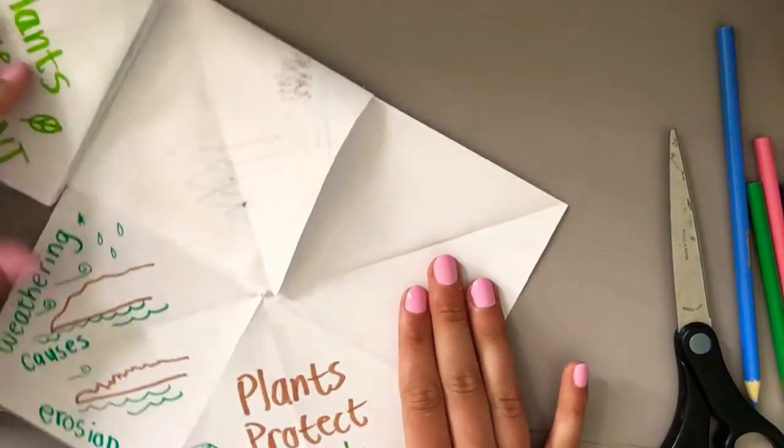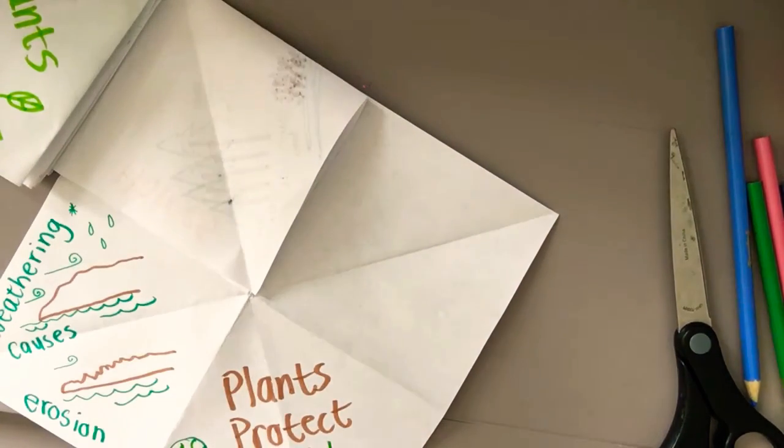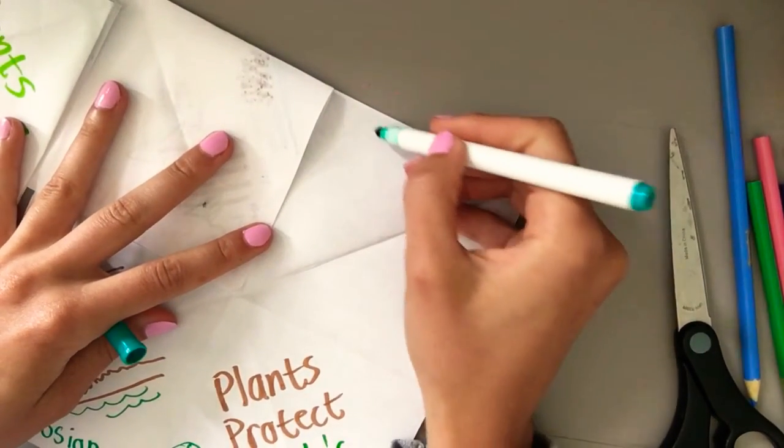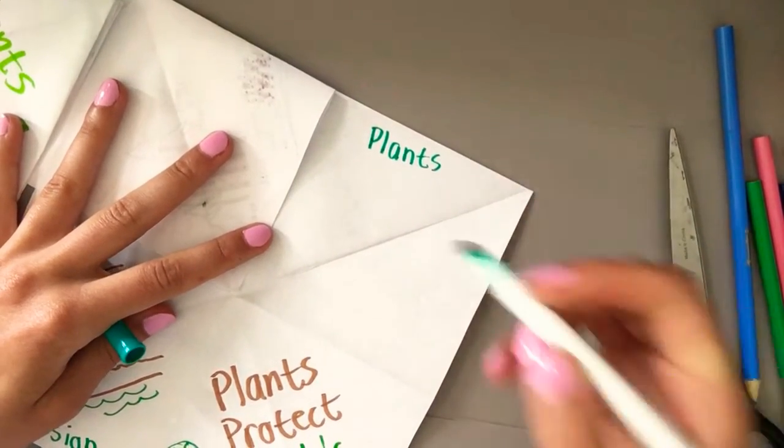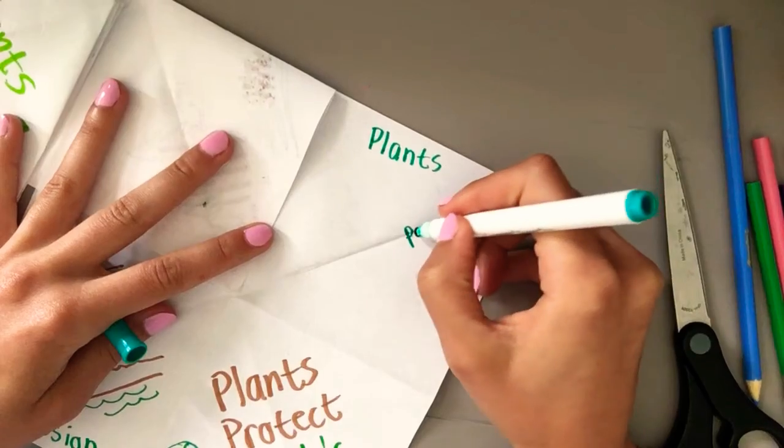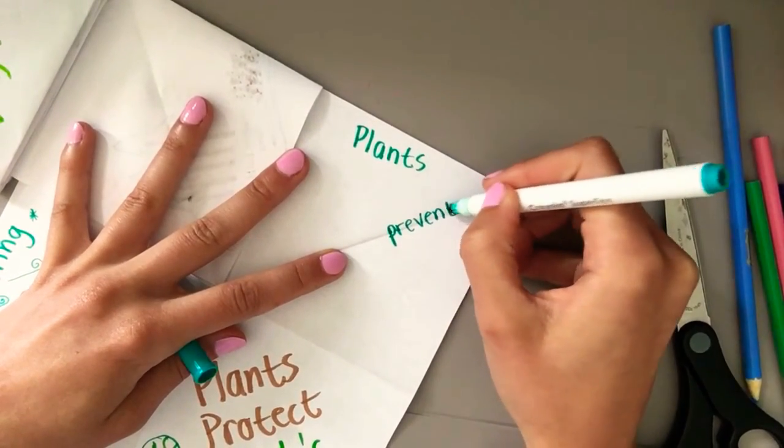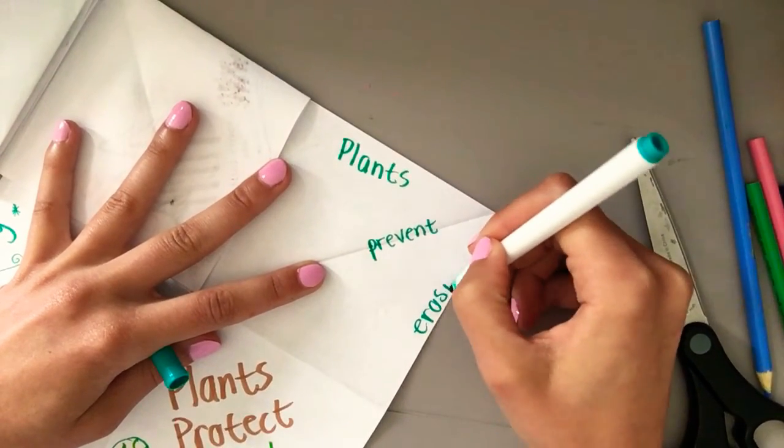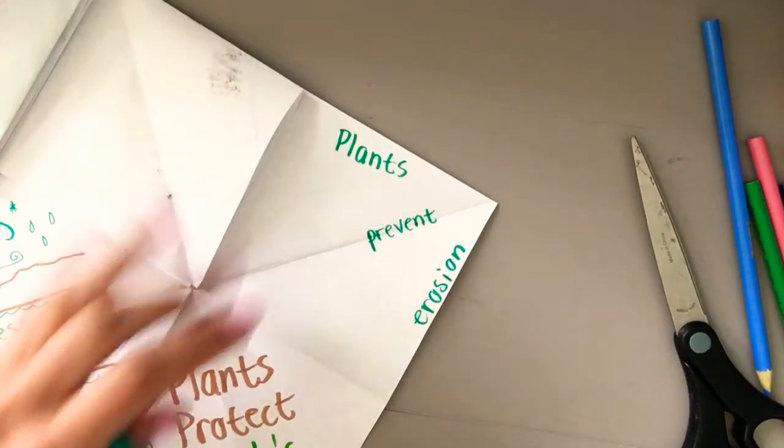Now, over to the right, I'm going to show how plants help with this whole thing. I'm going to use, I guess, the same color. And on the side, I'm going to say plants. This word is, on the crease, prevent. Plants prevent erosion. E-R-O-S-I-O-N.